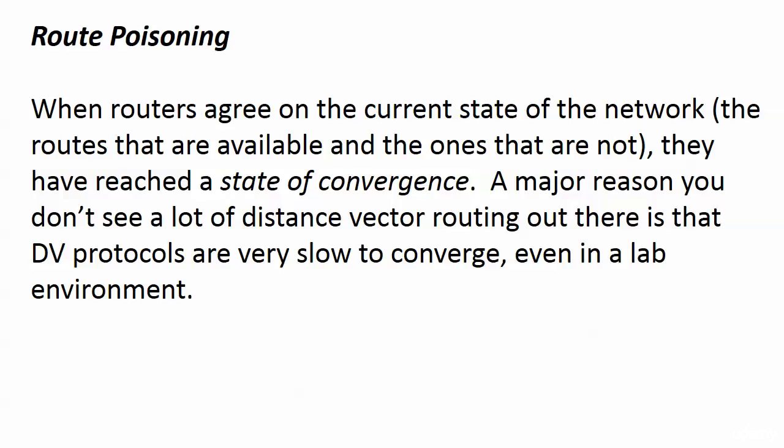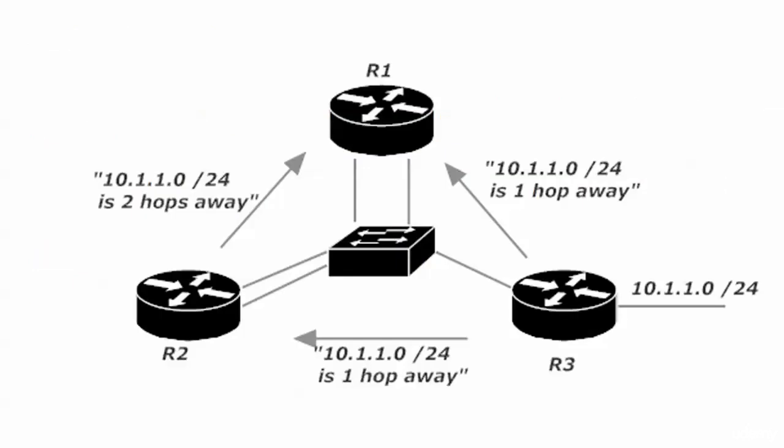Time for us to see what could be so positive about something that has such a nasty name: route poisoning. Here's an example of a distance vector protocol walkthrough. Router 3 is connected to 10.1.1.0/24, and it's advertising to routers 1 and 2 that that network is one hop away.